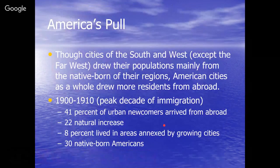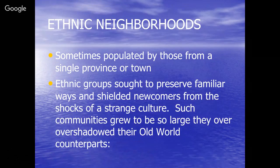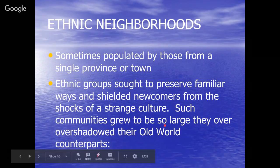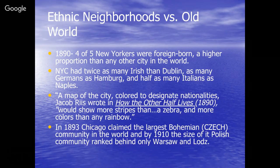New immigrants segregated themselves from others and lived in ethnic neighborhoods — Italians in certain neighborhoods, Greeks in others. Jacob Riis, in his book How the Other Half Lives, said: 'If you took a map of the city and colored it to designate nationalities, it would show more stripes than a zebra and more colors than any rainbow.' In 1894, four out of every five New Yorkers were foreign born — a higher proportion than any other city in the world. New York City was essentially the largest Irish city in the world, one of the largest German cities, and one of the largest Italian cities in the world.